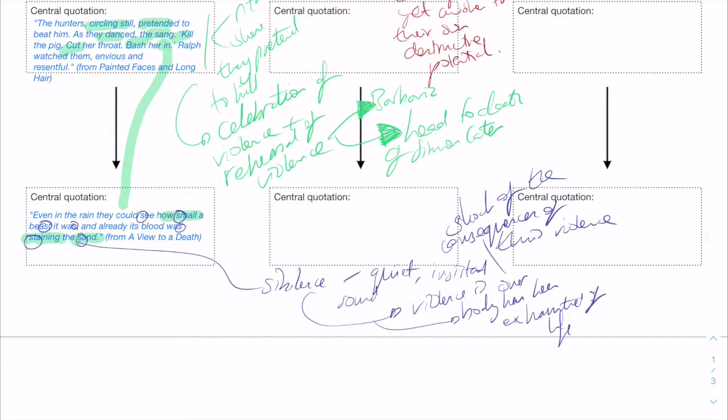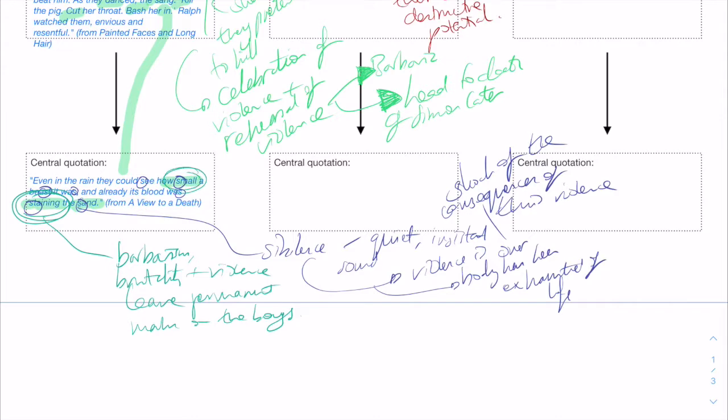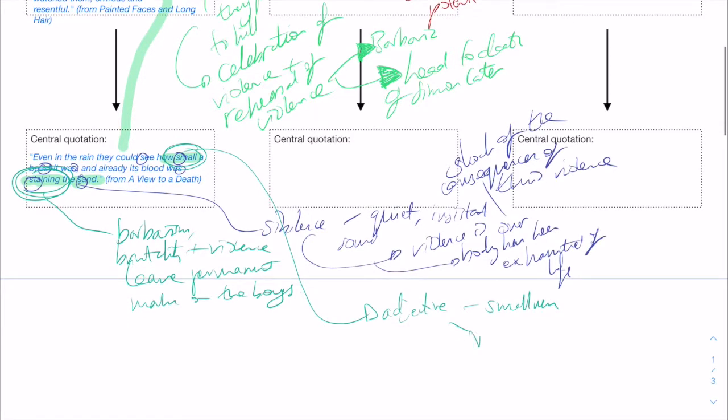Coming back into the main quotation, that verb here, staining. That barbarism, brutality and violence leave permanent marks on the boys. And finally, the smallness of the body, that adjective. The smallness, the vulnerability, the lack of safety, making Simon this almost inevitably targeted figure by this stage of the novel.